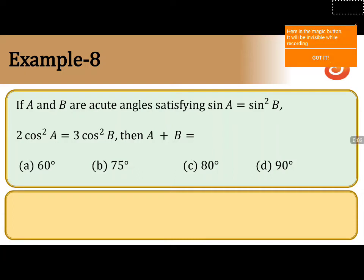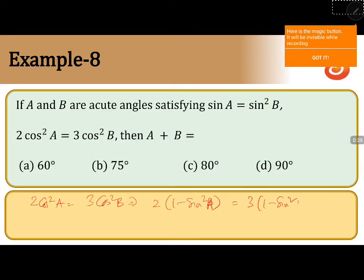In this problem, sin a is equal to sin square b is the condition, and 2 cos square a equals 3 cos square b. I will take 2 cos square a is equal to 3 cos square b, which implies 2 into 1 minus sin square a is equal to 3 into 1 minus sin square b.